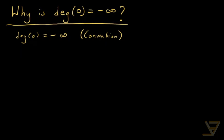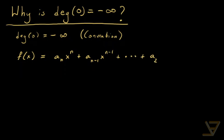Before we do that, let's make sure that everyone knows what degree means. A polynomial in one variable looks like f of x equals a_n x^n plus a_{n-1} x^{n-1}, all the way through to a_2 x^2 plus a_1 x plus a_0, where a_n is a real or complex number. The degree is n, the exponent of the leading term — the highest exponent.